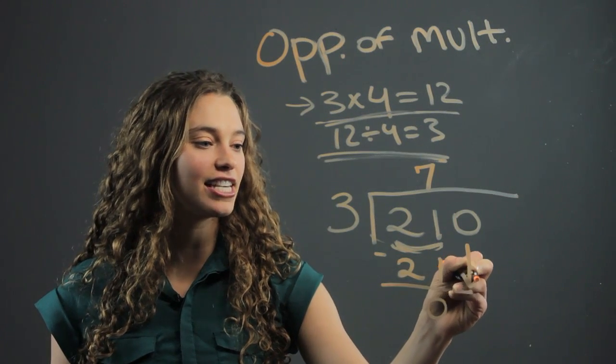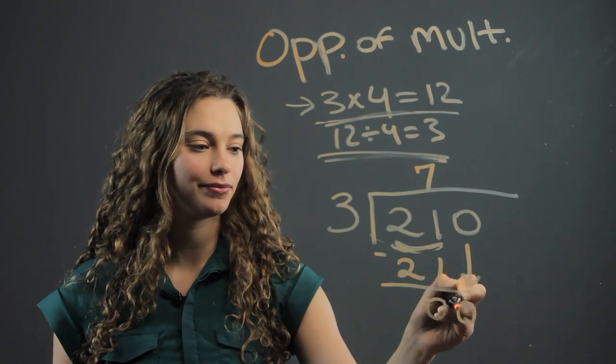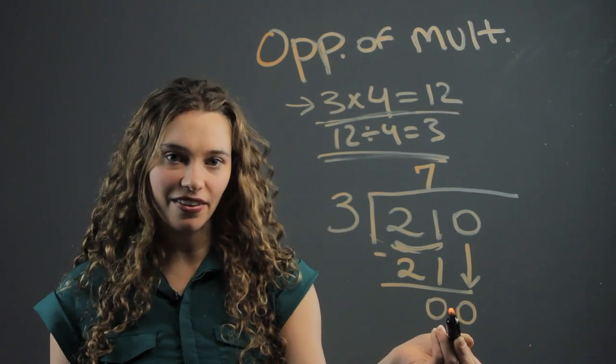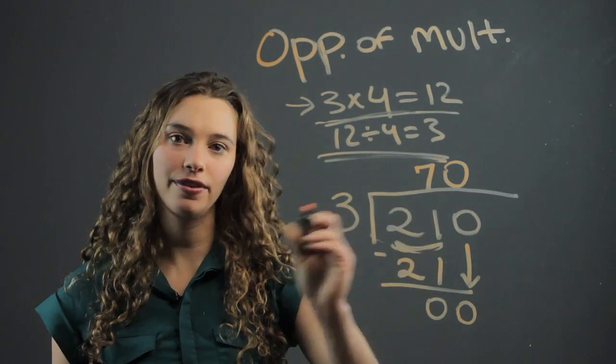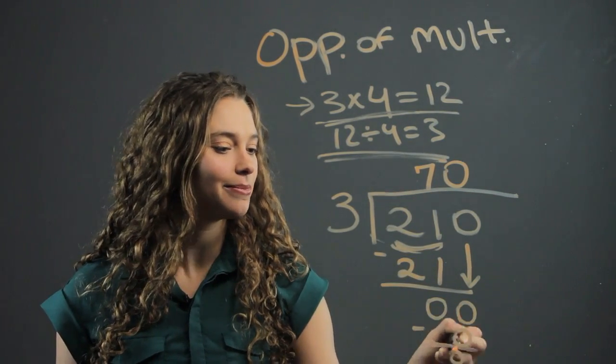Then you're going to want to bring down the next number. So we bring down the next zero. So double zero is zero. Three into zero, it goes in zero times. So we write a zero. Three times zero is zero. Zero minus zero is zero.